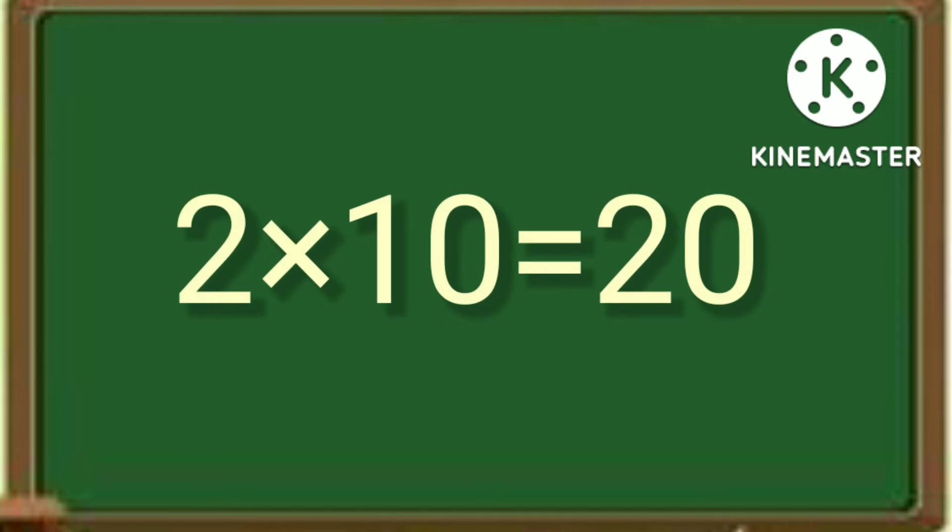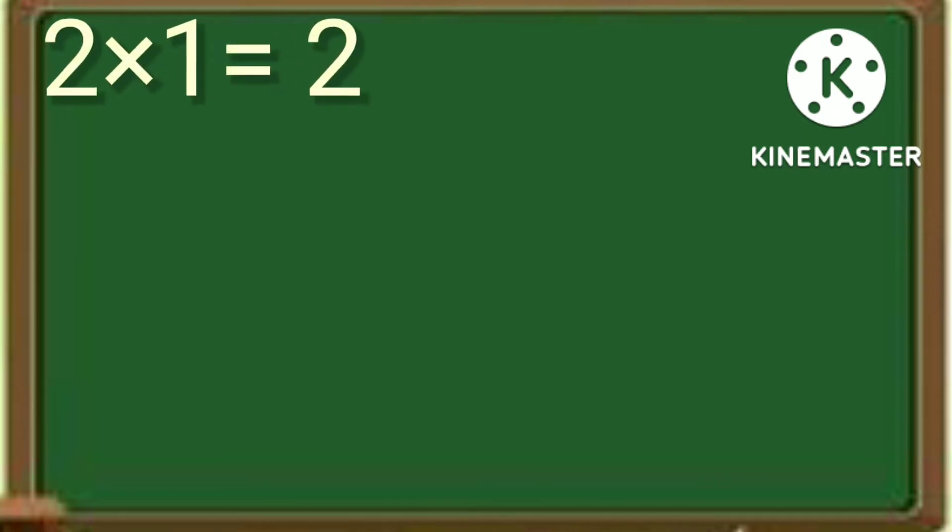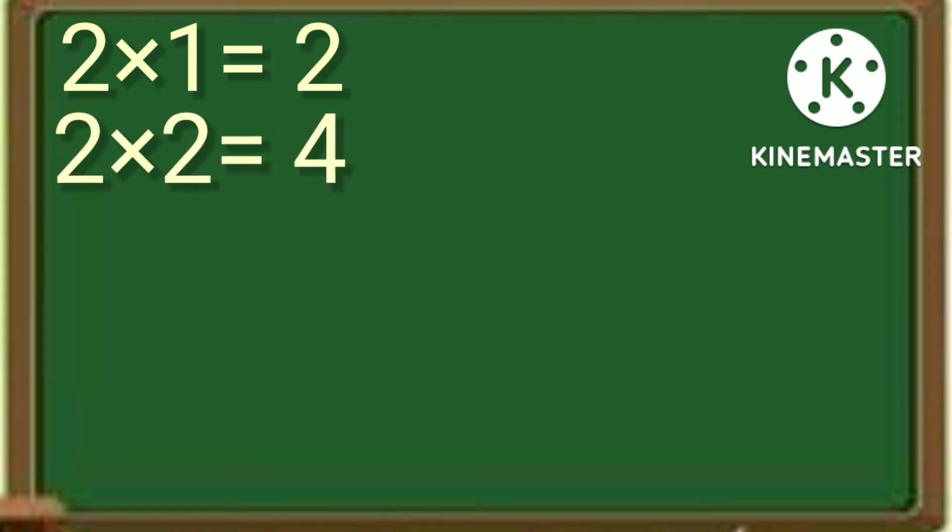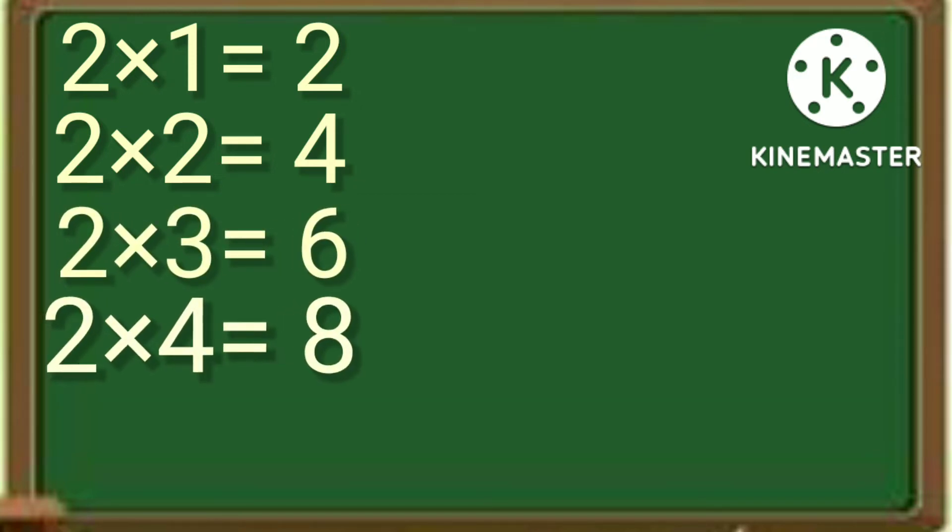2 times 1 is 2, 2 times 2 is 4, 2 times 3 is 6, 2 times 4 is 8.